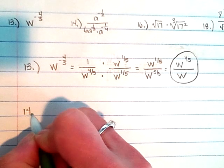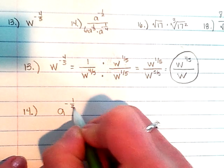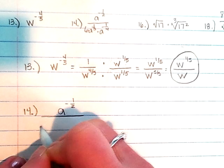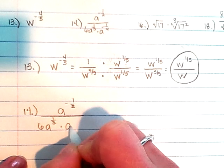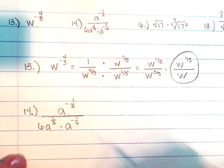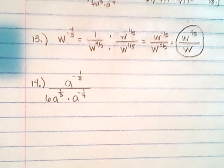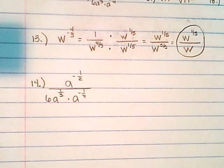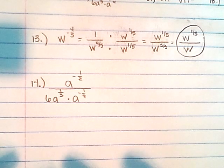Moving on, number 14 asks us to simplify a to the negative one-half divided by 6a to the one-third power times a to the negative one-fourth power. You can see we have a lot of bases that are a's, with negatives, positives, multiplication, and division. When I have multiplication and division, I'm going to repeat the bases and add or subtract the exponents.